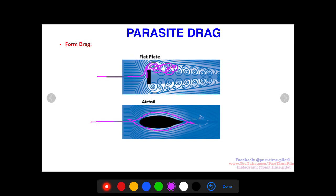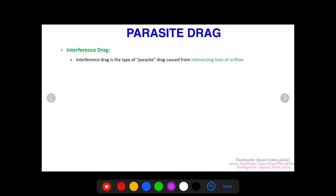Now the next one is interference drag. Interference drag is the type of parasite drag caused from intersecting lines of airflow. There are several surfaces on an aircraft that cause air to deflect and move in different directions.